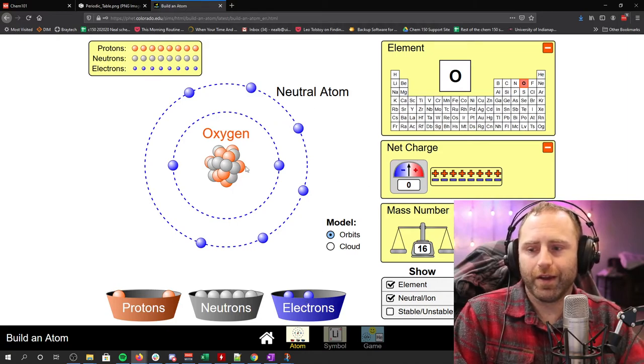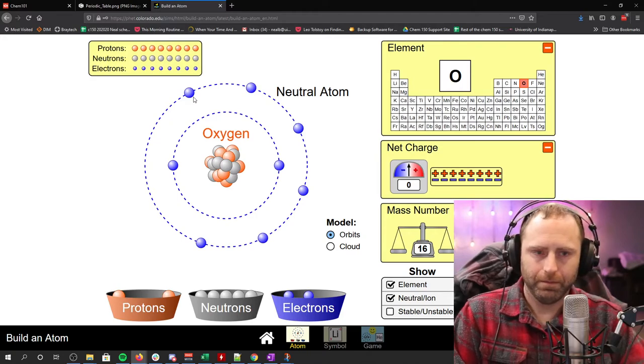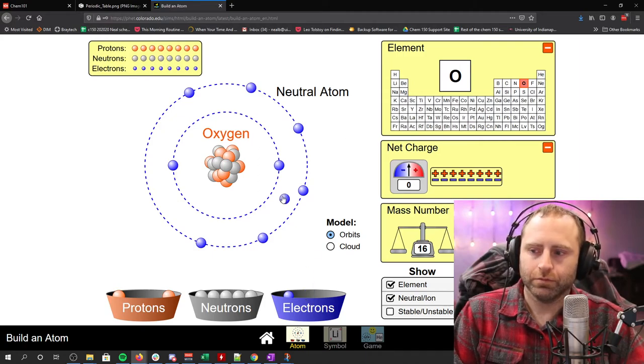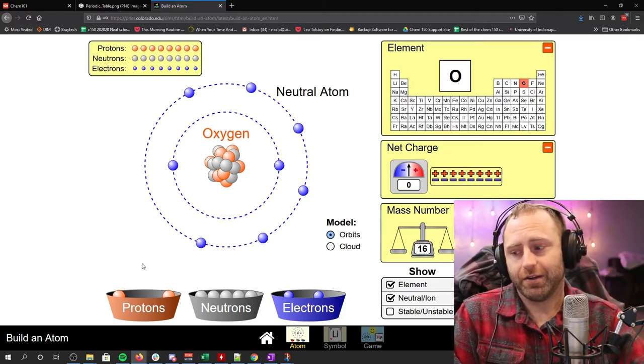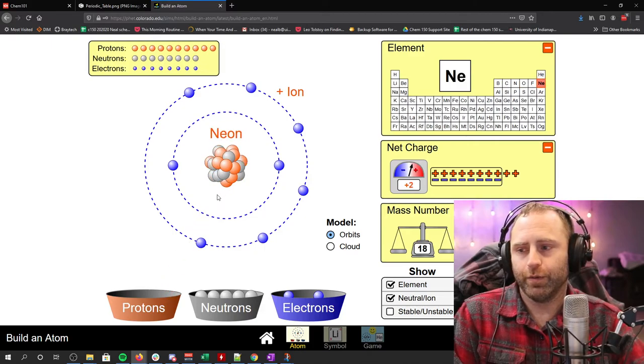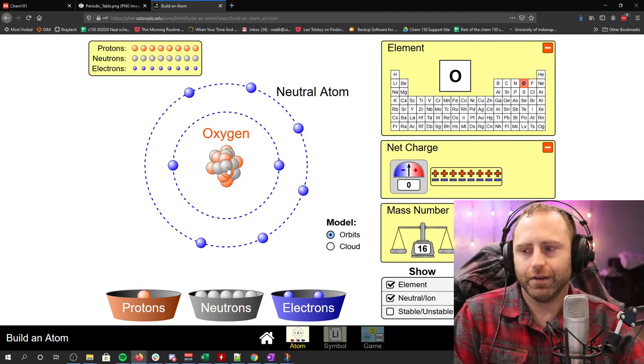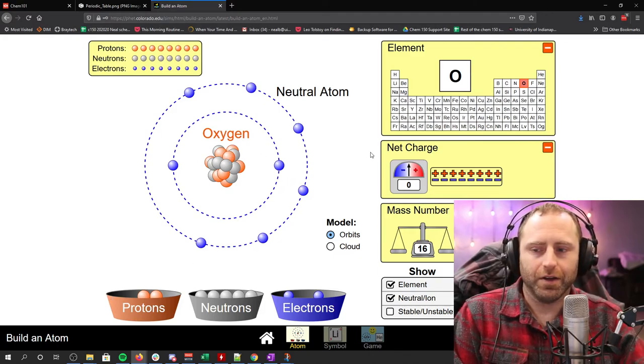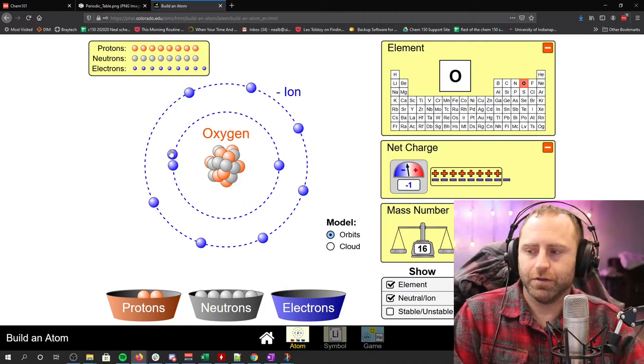So neon, like we were talking about earlier, has ten electrons in its neutral atom form. Right now, if we count up the number of electrons we've got on our oxygen, it's only eight. One, two, three, four, five, six, seven, eight. Well, so if we change the number of protons at this point, we're going to change our atom. Like if we go boom, boom, now we're neon. But we didn't want to change the element. So we're going to go back to the element of oxygen.